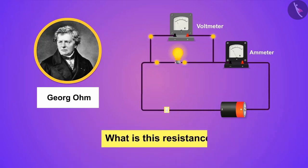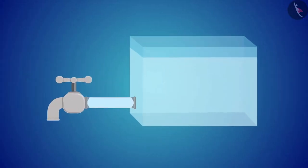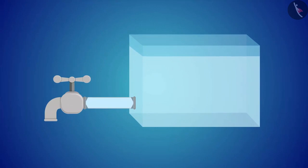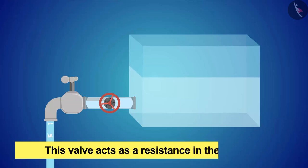But what is this resistance? Do you remember that water tank analogy from the last video? Here we use that analogy to understand this concept. If a valve is placed in a pipeline which controls the amount of water flowing towards the tap, then this valve acts as a resistance in the pipeline.